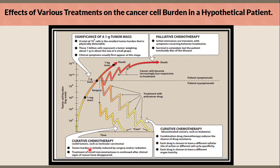For curative chemotherapy for solid tumors such as testicular carcinoma, the tumor burden is initially reduced by surgery and/or radiation — reducing below the 1 mg mass — followed by treatment of occult micrometastases, continued after clinical signs of cancer have disappeared. For disseminated cancers such as leukemia, the curative chemotherapy option is done by applying chemotherapy protocols. Combination drug chemotherapy reduces the chance of drug resistance, with each drug chosen to have different cellular site of action, different cell cycle specificity, and different organ toxicity.